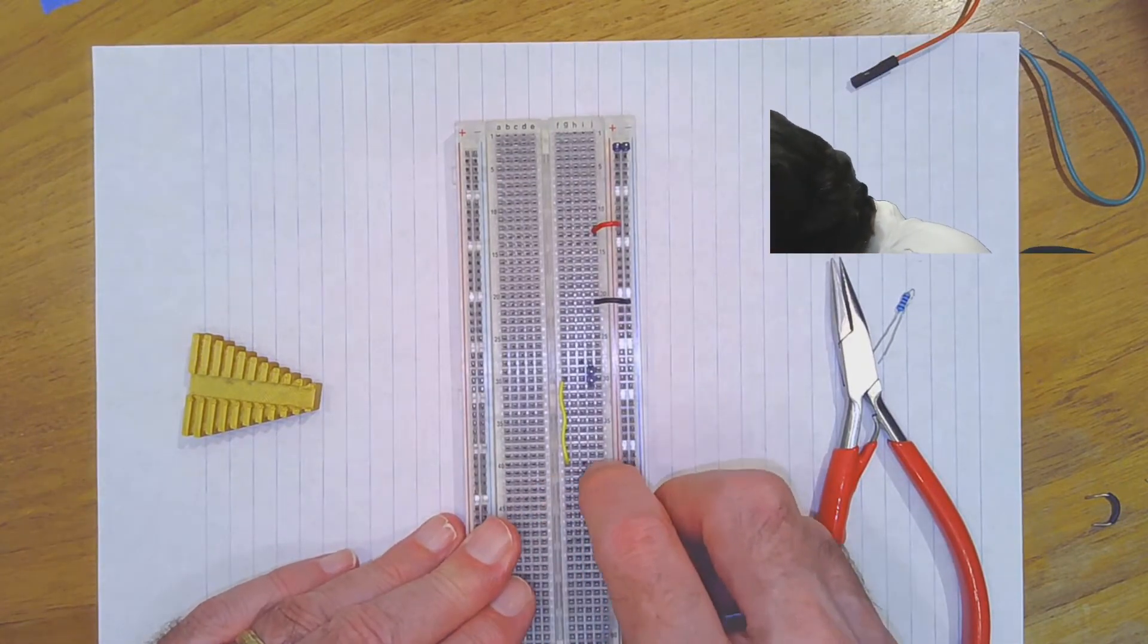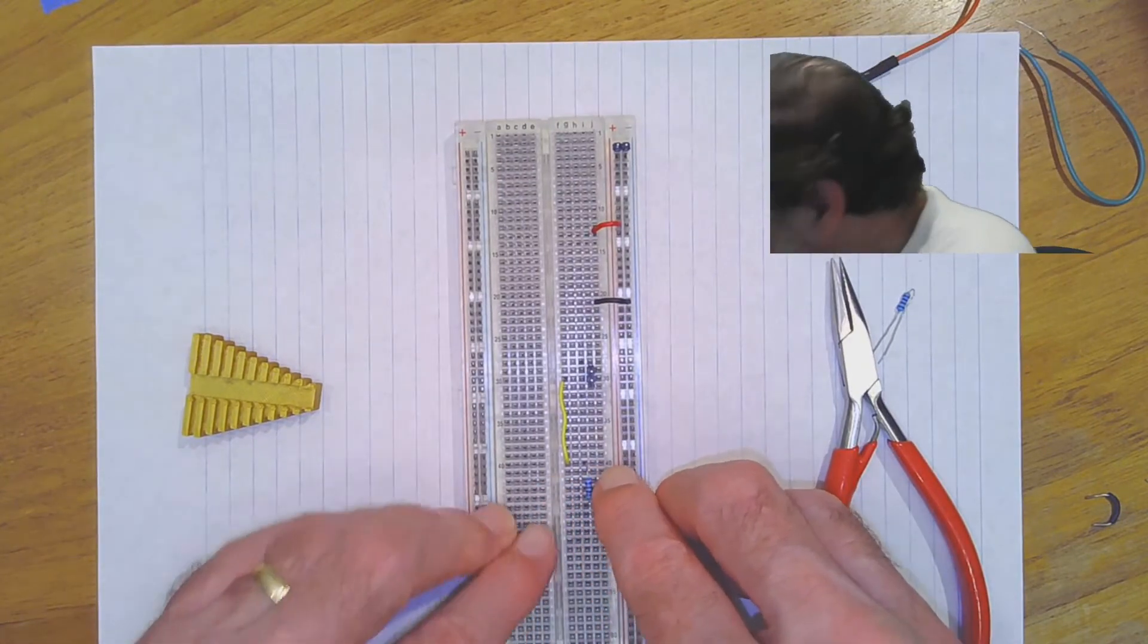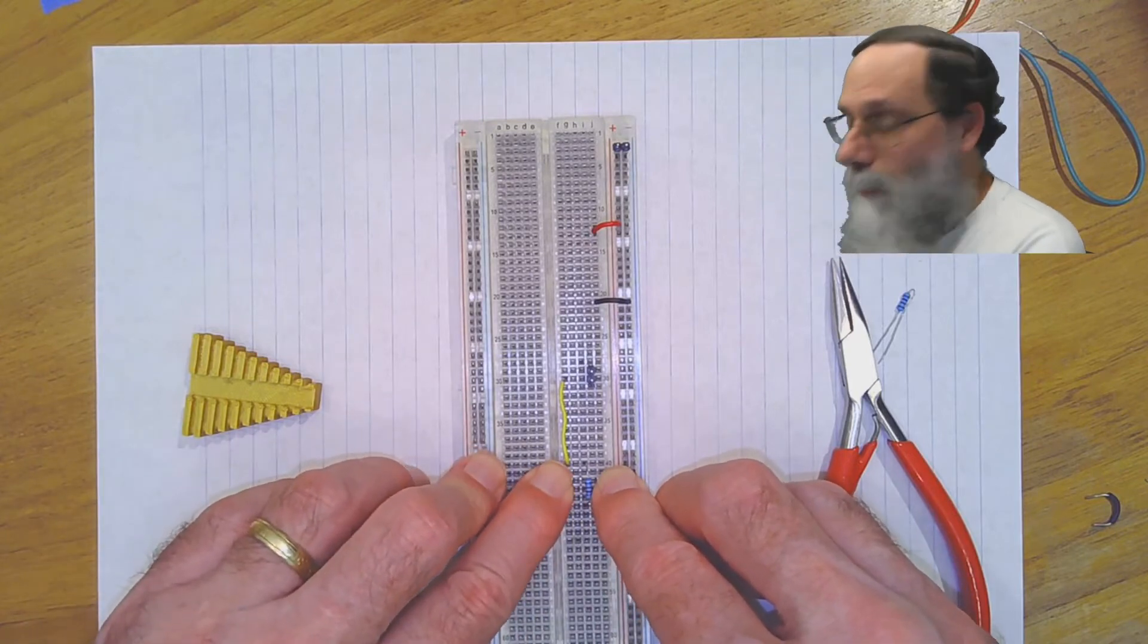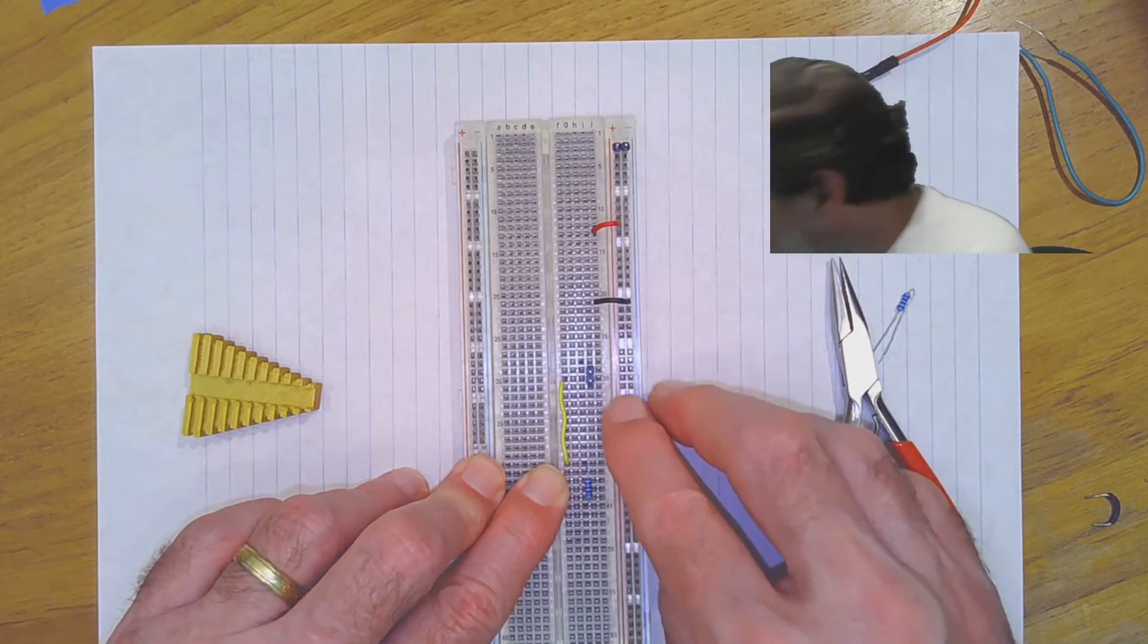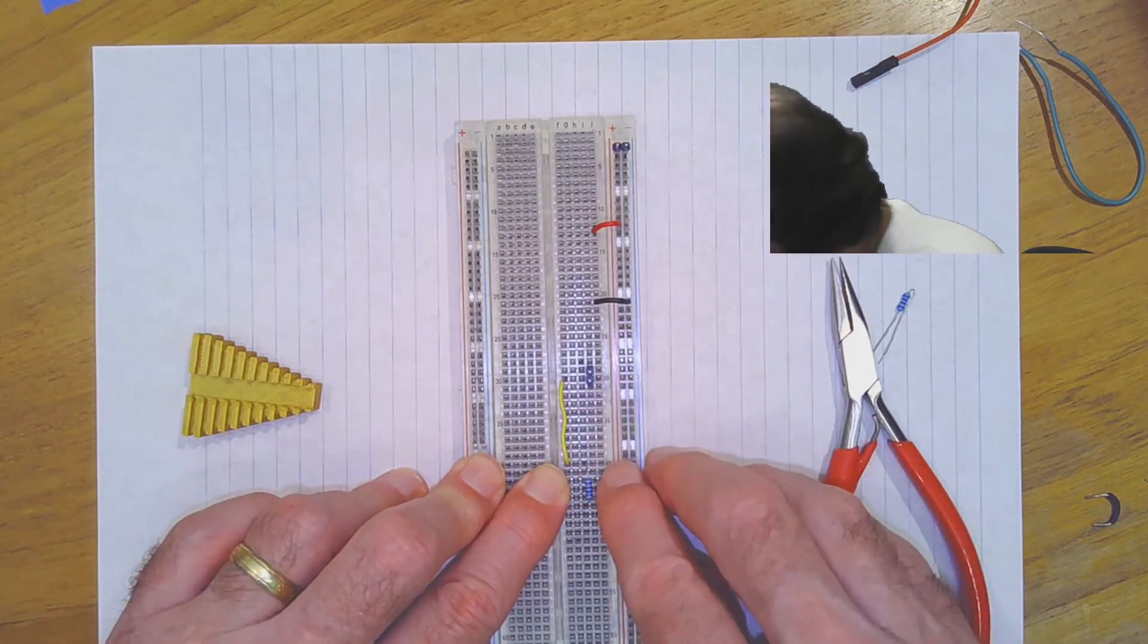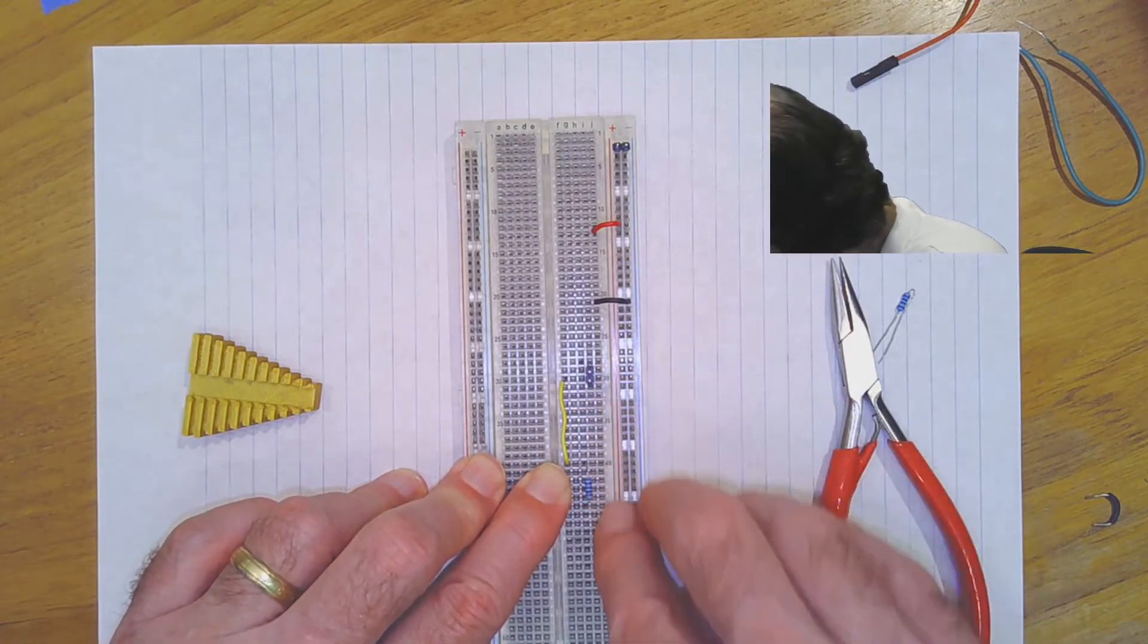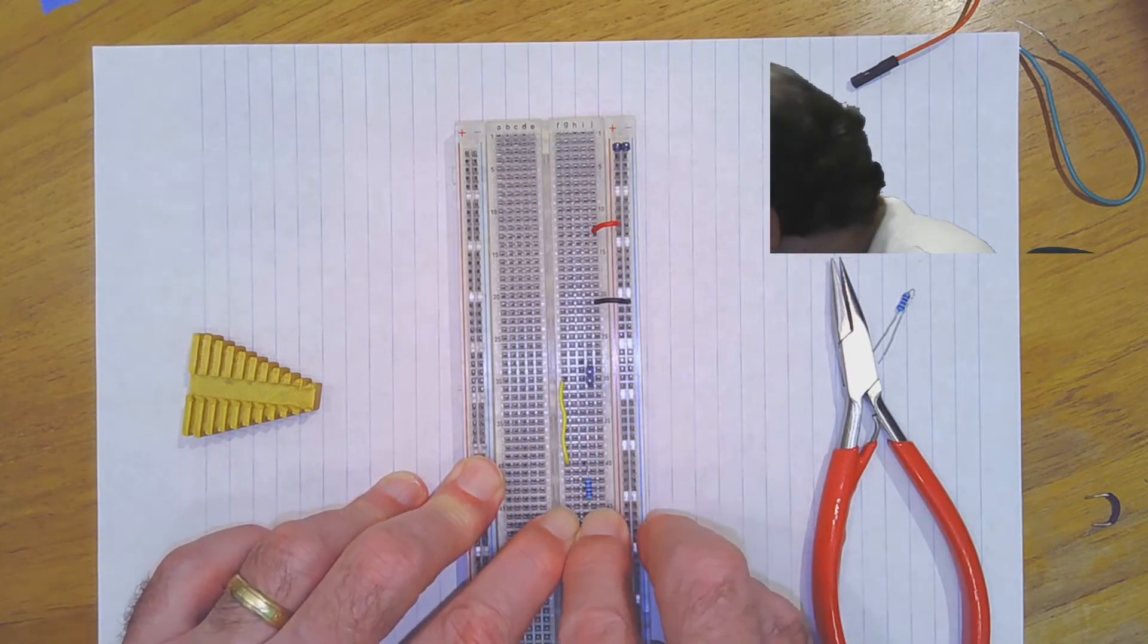And you can see that the wire here goes into row 40, which is the same row that this yellow wire is in. So this yellow wire connects this pin that's in row 30 to row 40, and then there's a resistor that goes down to row 45.